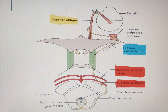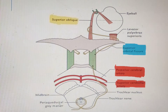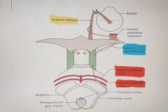Unlike the oculomotor nucleus, where there was fusion of the two nuclei in the midline of the brainstem, for the trochlear nucleus there is no such fusion — the two nuclei are separate, as you can see here. The fibers from the right nucleus cross to the opposite side, and fibers from the left nucleus cross to the right side.